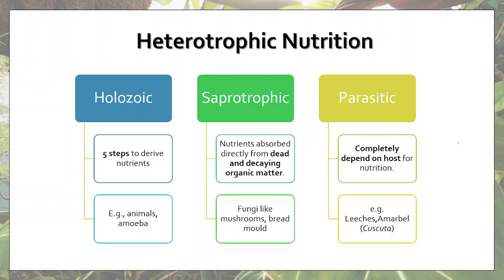In holozoic mode of nutrition, which is also found in human beings, there are five steps to derive nutrients. Once the organism has taken in food, that food undergoes five different steps, and ultimately those steps are required to derive nutrients out of the food, which are then utilized to derive energy. Apart from animals, amoeba, paramecium and other unicellular microorganisms also depend on holozoic mode of heterotrophic nutrition. Saprotrophic nutrition is shown by fungi like mushroom, bread mold, and yeast.